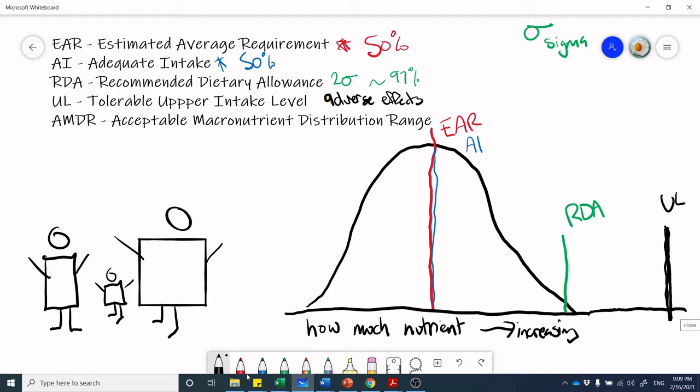For certain nutrients, if you eat too much on a consistent basis it can start to cause physiologic harm. Certain fat soluble vitamins, vitamin A and vitamin D in particular, if you consume too much of that on a routine basis it can start to cause harm to you. Same with certain minerals, iron or zinc or copper. If you consume far too much of that it can start to cause physiologic harm as well.